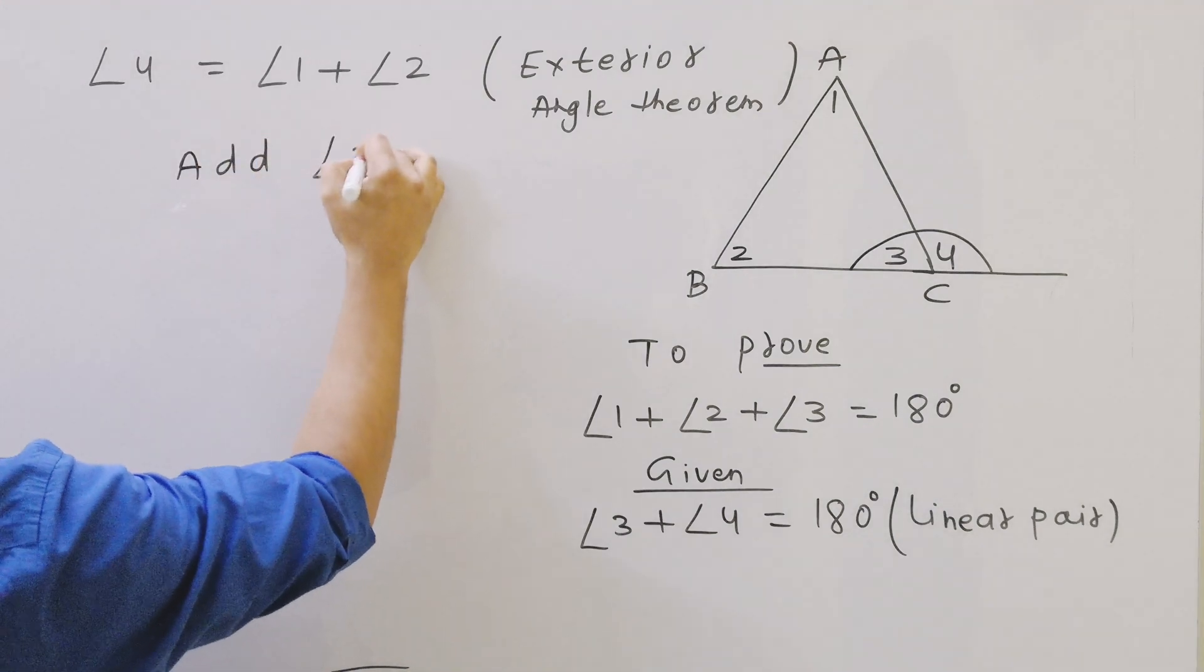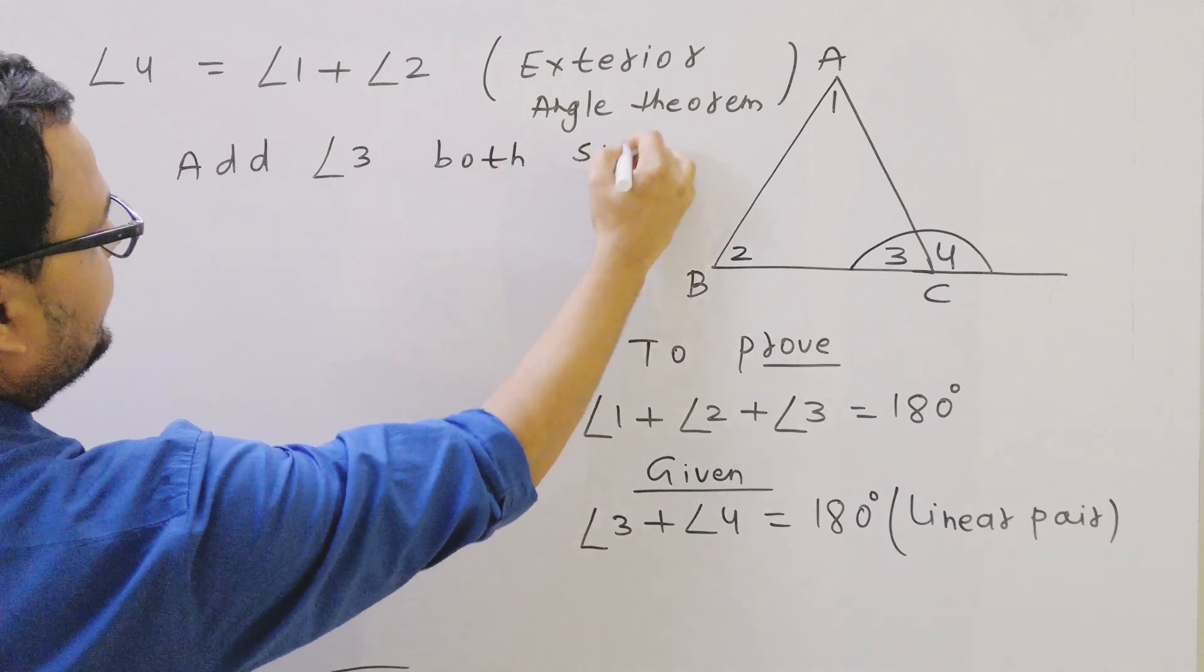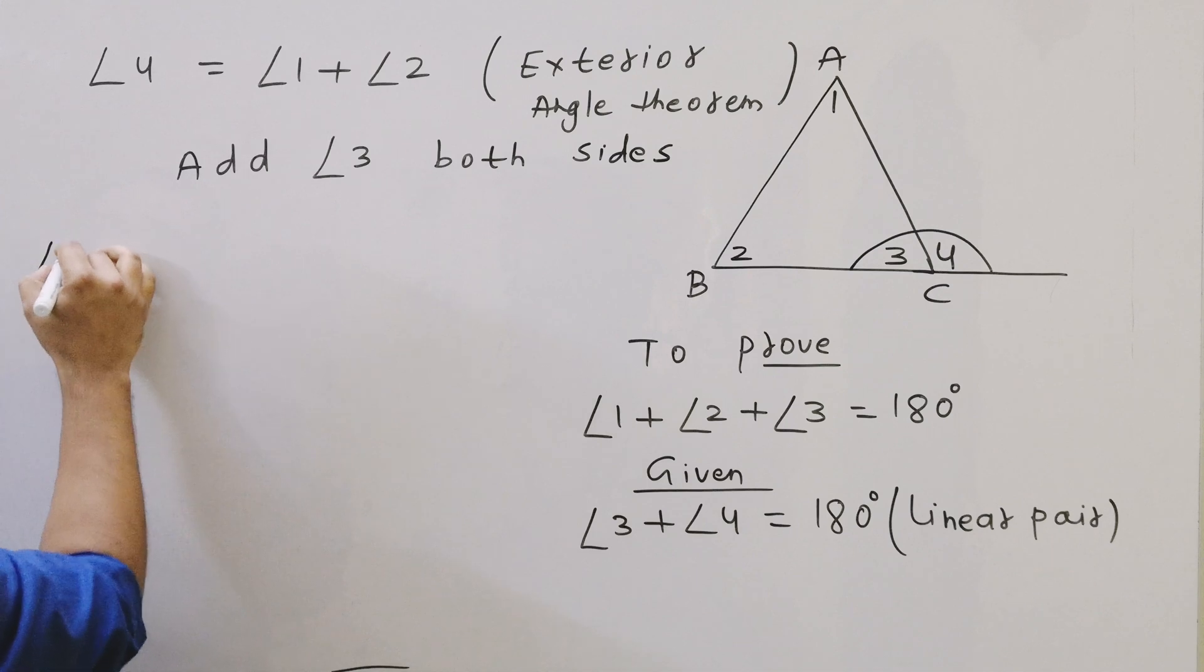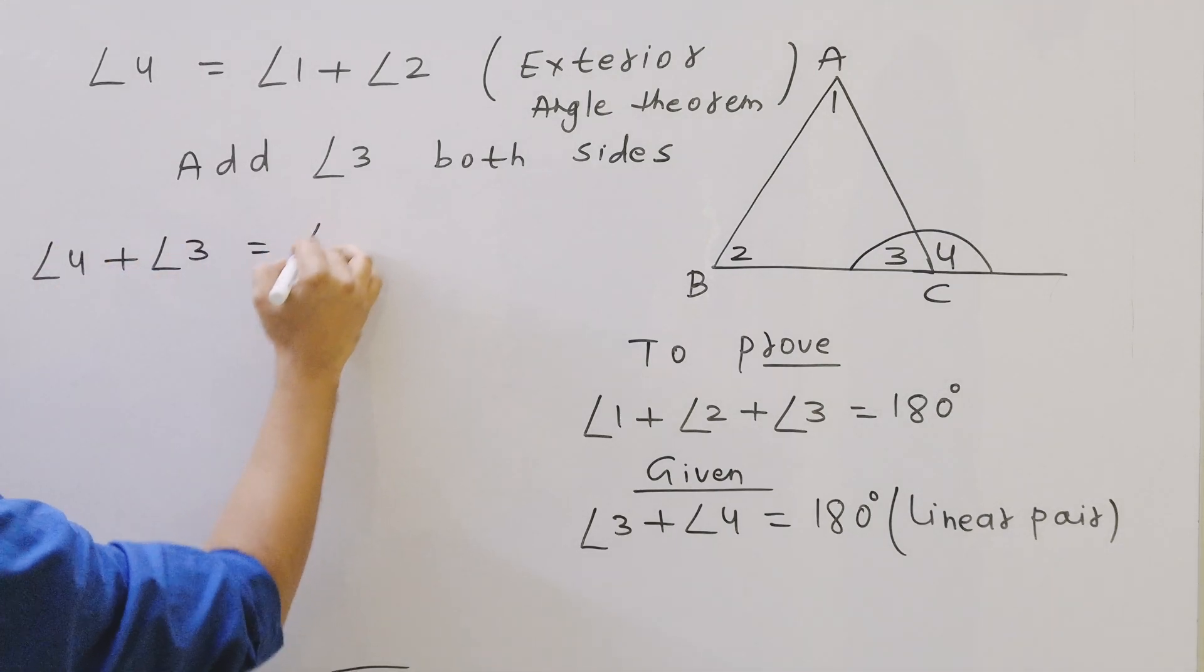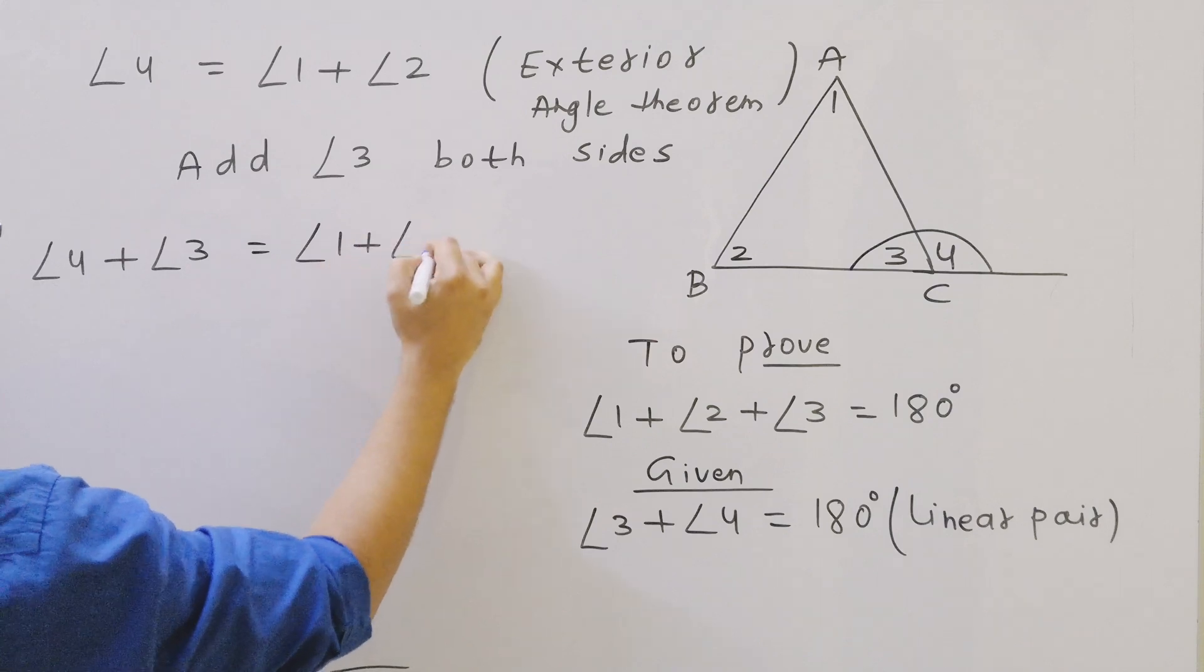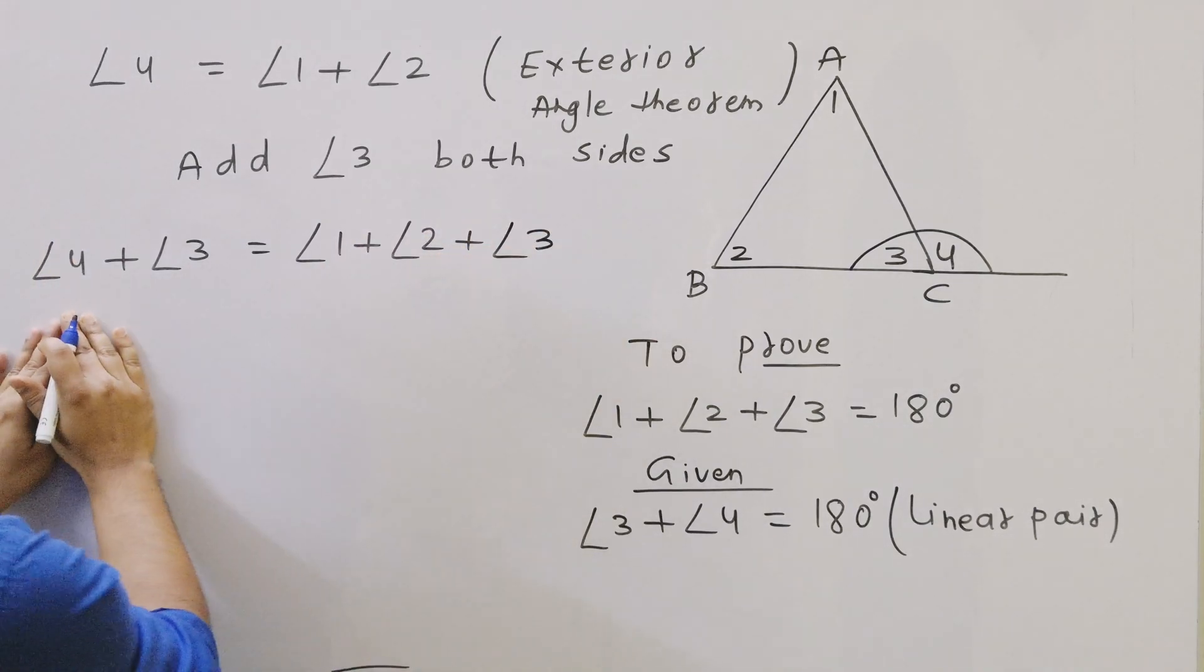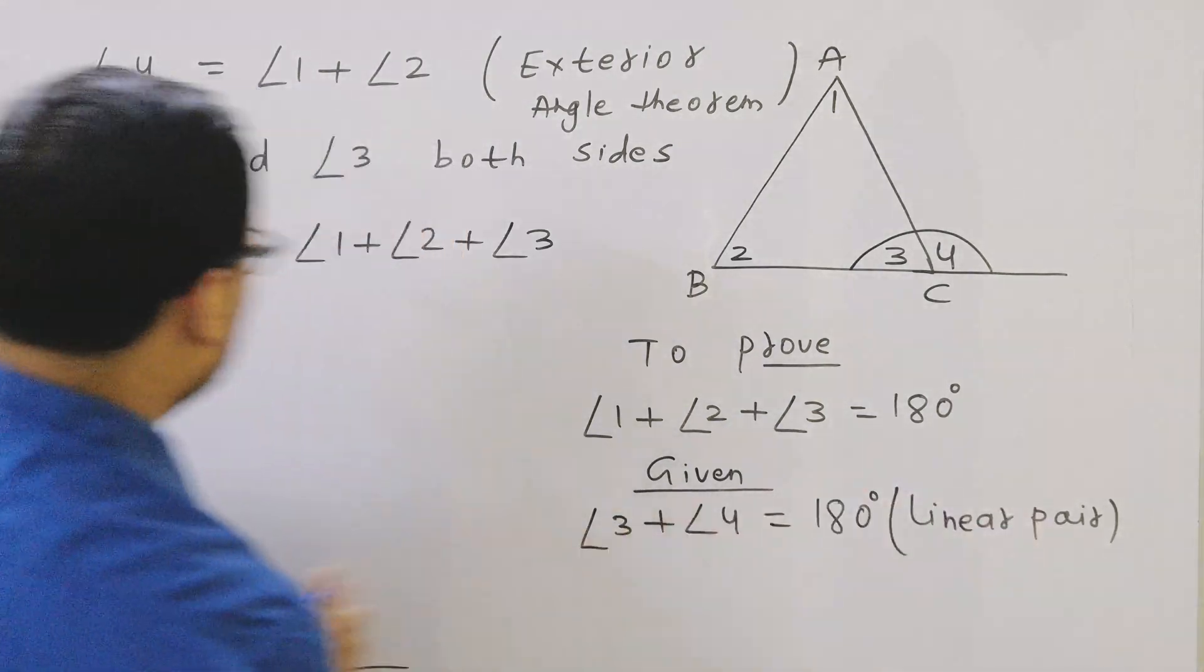So angle 4 plus angle 3 equals 180. Why? Because they are a linear pair. So in place of angle 4 plus angle 3, I can write it as 180 degrees equals angle 1 plus angle 2 plus angle 3, and the same thing we had to prove.